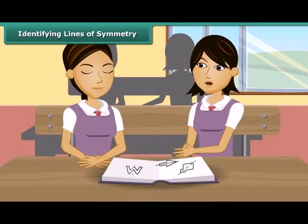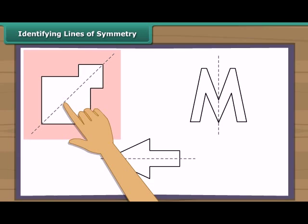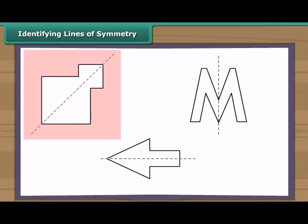Priya, can you now identify the line of symmetry in these designs? I will try. In this figure, this is the line of symmetry or axis of symmetry. When we fold this design this way, the two parts so formed will coincide. So this is the line of symmetry.